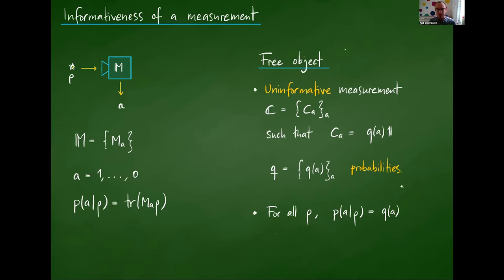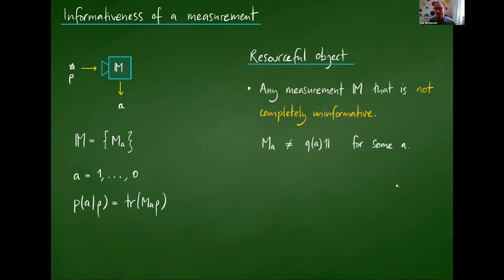What does it mean for a measurement to give me no information about the quantum state? A little thought shows that this is achieved if all the POVM elements are proportional to the identity operator. Because I want these to be positive and sum to the identity, it basically means that I have a probability distribution q — a set of probabilities. If I take this measurement and measure any quantum state ρ, the probability of seeing outcome a is just q(a), independent of ρ. So this is just encoding a random variable into a POVM — the measurement doesn't tell me anything about the underlying quantum state. This is the free object in the theory, much like a separable state in entanglement theory.